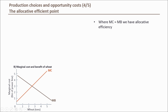Allocative efficiency occurs where marginal cost equals marginal benefit. We can identify this point by looking at the intersection of the marginal benefit and marginal cost curves. This is point B', which corresponds to 2.5 tonnes of wheat, where marginal cost and marginal benefit both equal 3 kilometres of power lines.